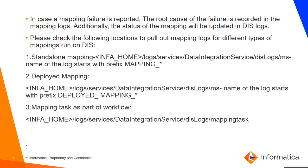In case a mapping failure is reported, the root cause of the mapping failure is recorded in the mapping logs. Additionally, the status of the mapping will be updated in the DIS. Based on the different types of mappings run on DIS, the logs for these mappings are also generated in different folders under different names.